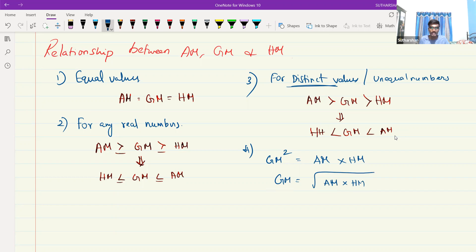Are you able to understand the relationship between AM, GM and HM? Have you understood the relationship between AM and HM? First, if it is equal value, it is equally important. For any real numbers value, it is always AM is a first place. AM is greater than or equal to GM. It should be greater or it should be equal to GM. GM should be either equal or either you can greater than HM also. It should not be less than HM. For distinct values or unequal numbers, always AM is greater, GM should be greater. It should not be equal or lesser, it should be greater and HM should be greater.